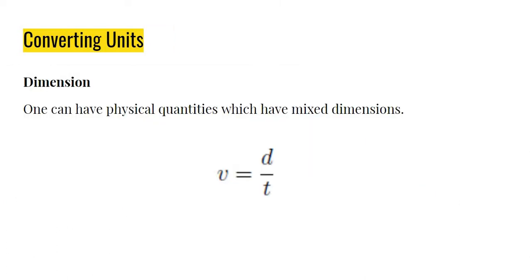There are also physical quantities which have mixed dimension. For example, velocity. This V here is a velocity. A velocity is equal to distance over time. The unit of distance is meters, or kilometers, or miles. The unit of time is seconds, minutes, or hours. Velocity could be meter per second, or kilometer per hour, or miles per hour.